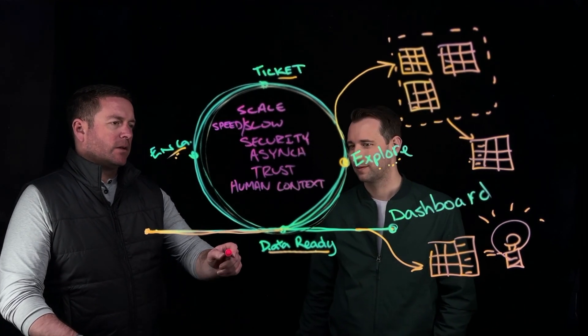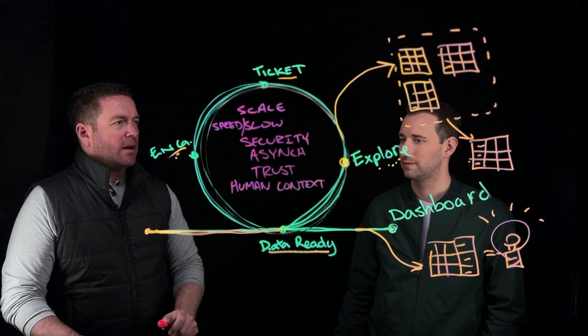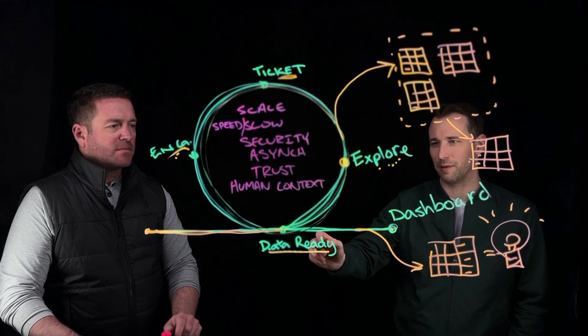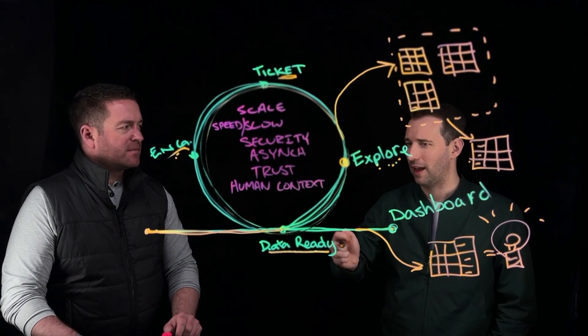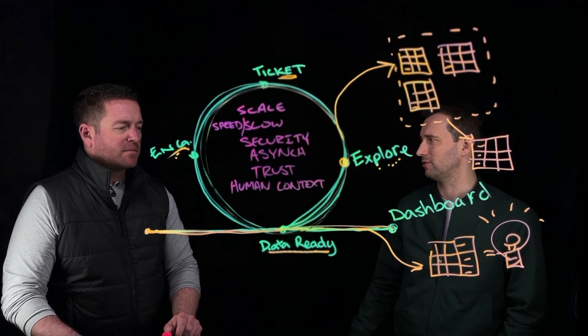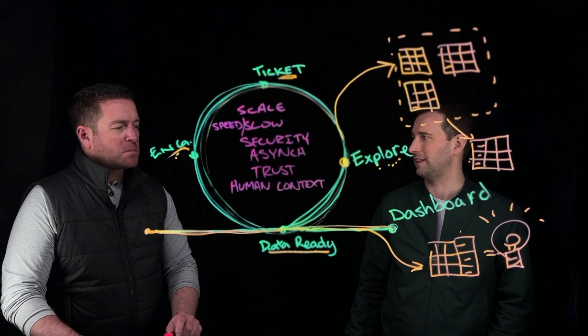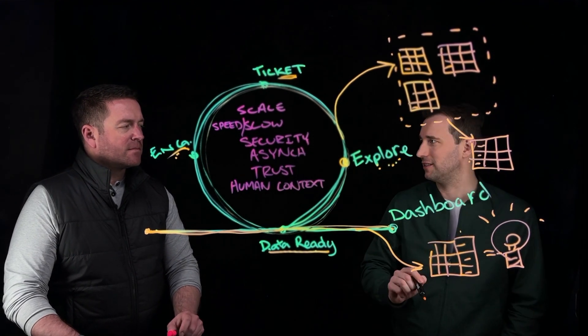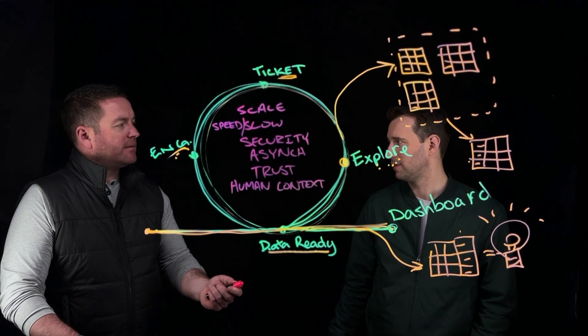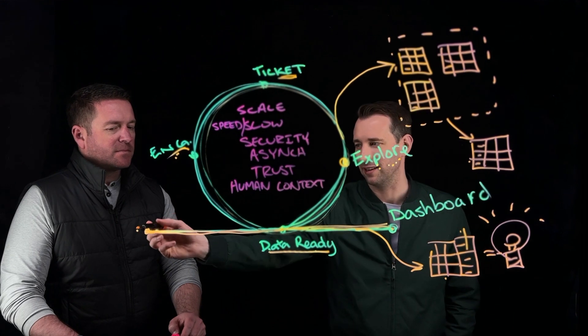So you're saying if they were using Sigma, they could explore to their heart's content. But how does it prevent the export to Excel? We've eliminated the need for tickets and engineering to make updates to this data because they can immediately explore. This is where Sigma's proprietary write back to the data warehouse happens. We call it input tables where you have the ability to add a column to an existing dashboard or workbook, add that context in without ever having that data leave the data warehouse. And that doesn't live in Sigma. It doesn't live in Sigma. Anything that we add to this column goes automatically back into the data warehouse.